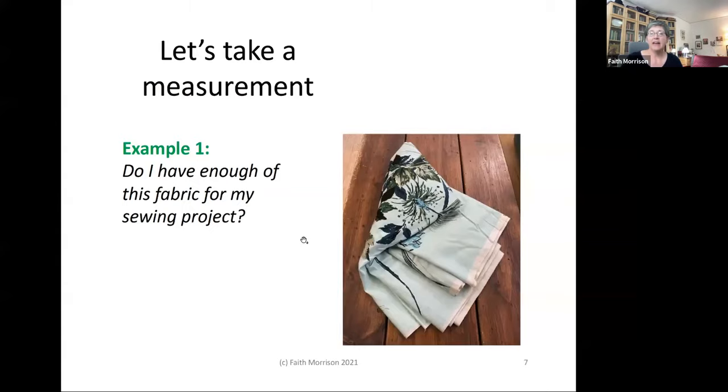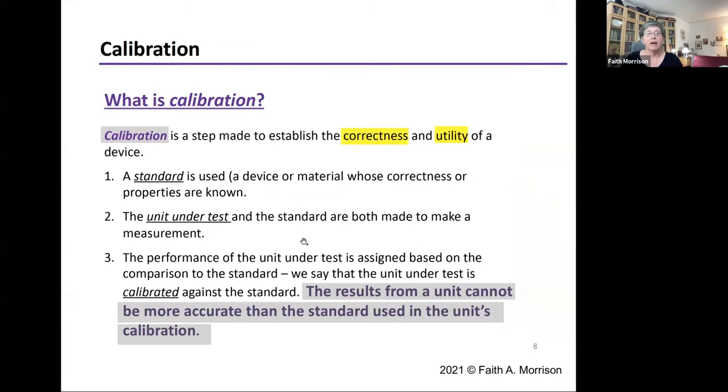So that is the first sort of issue that comes into finding out about the accuracy of a measurement made with a device or a technique is calibration. So the formal definition of calibration is a step made to establish the correctness and utility of a device. So I had a device or technique. I had this measurement technique that worked, I hope, and then I had to calibrate it against a standard.